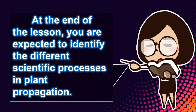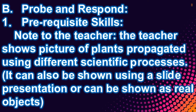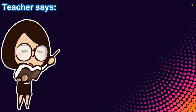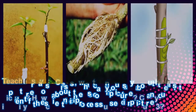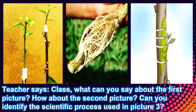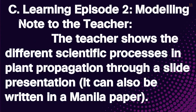At the end of the lesson, you are expected to identify the different scientific processes in plant propagation. Prerequisite skills: what you are about to see are plants propagated using different scientific processes. Observe each picture and share your observation later to the class.